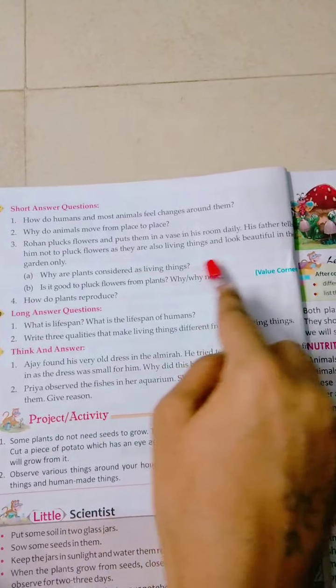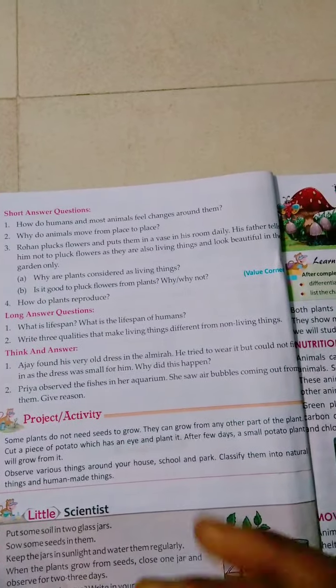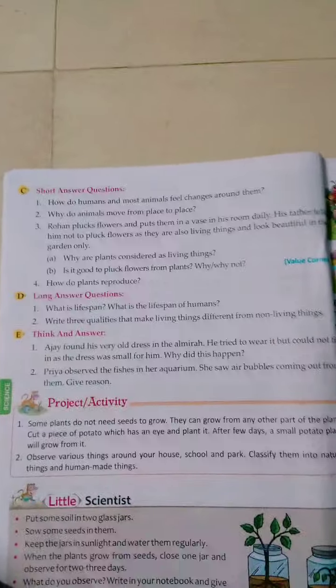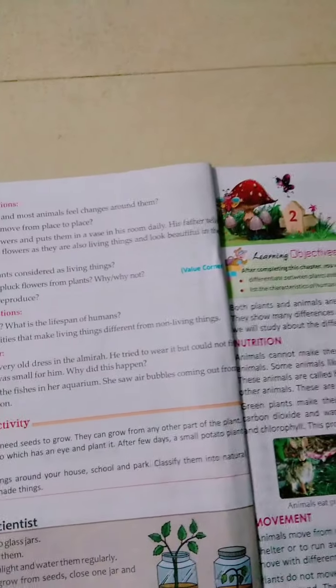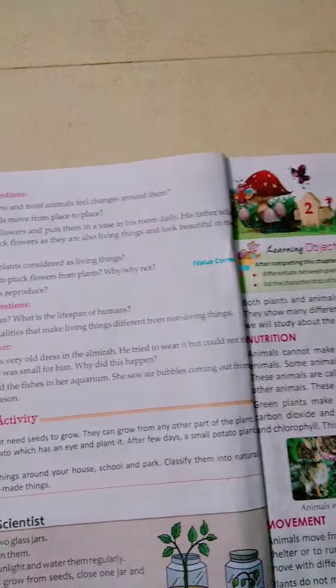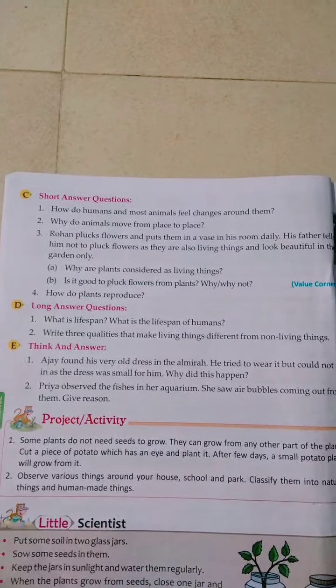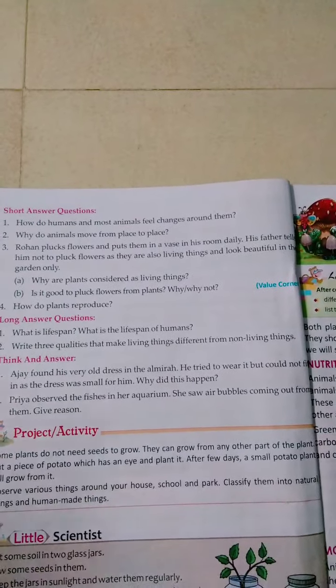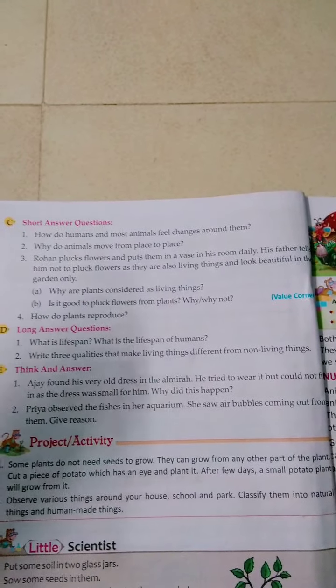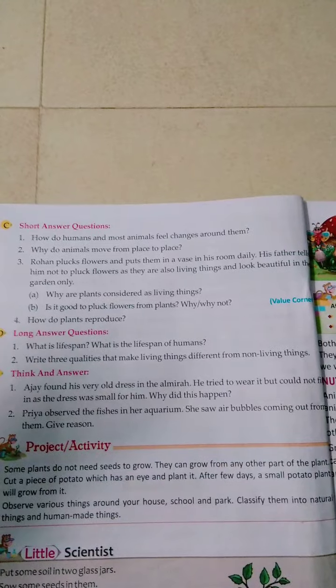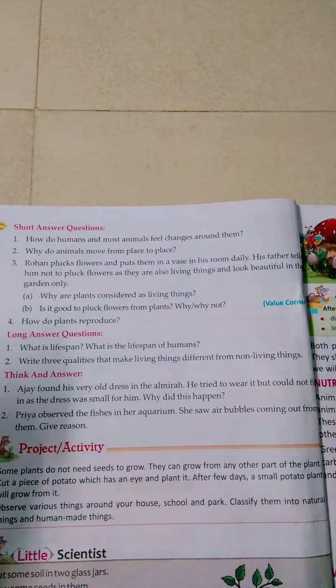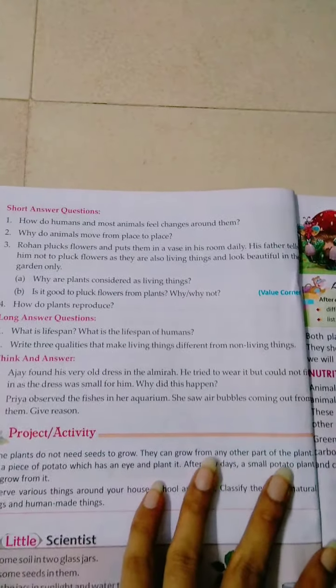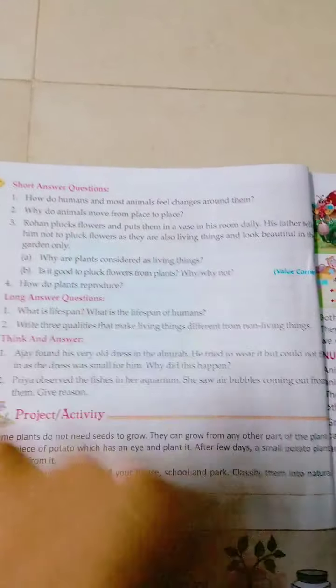First question: Why are plants considered as living things? The answer will be: Plants are considered as living things because they show the characteristics of living things. Whatever characteristics living things have, plants show those. That is, they grow, need food and water, feel and react, breathe and show movement, and reproduce. So these seven characteristics of living things, plants show, that's why they are living things.